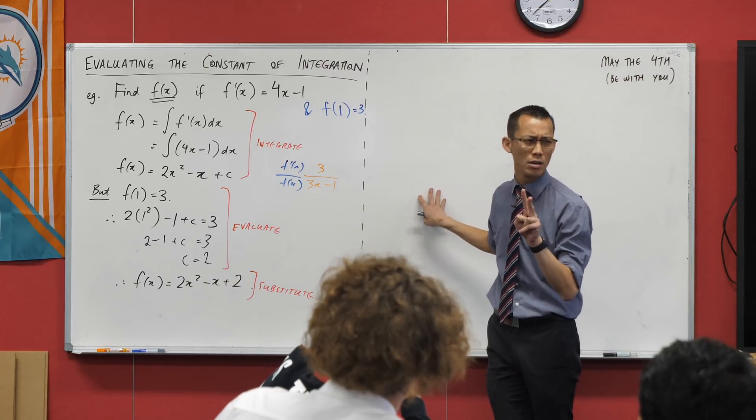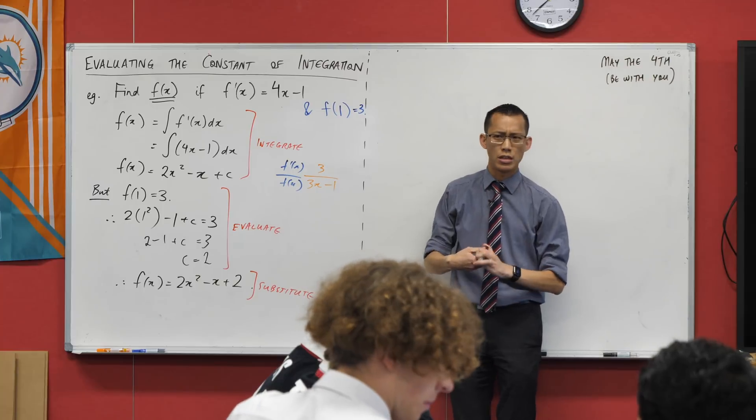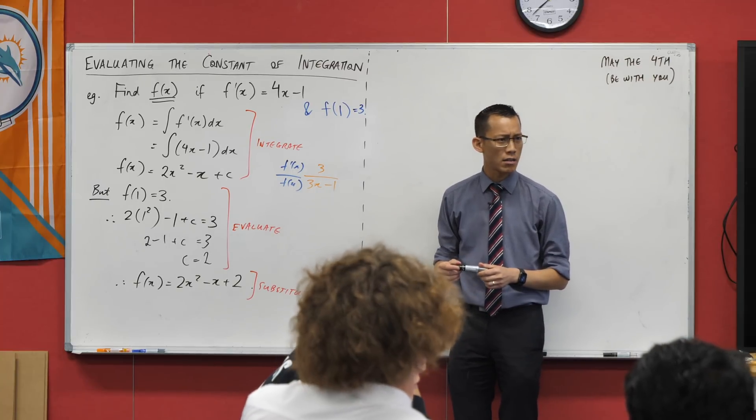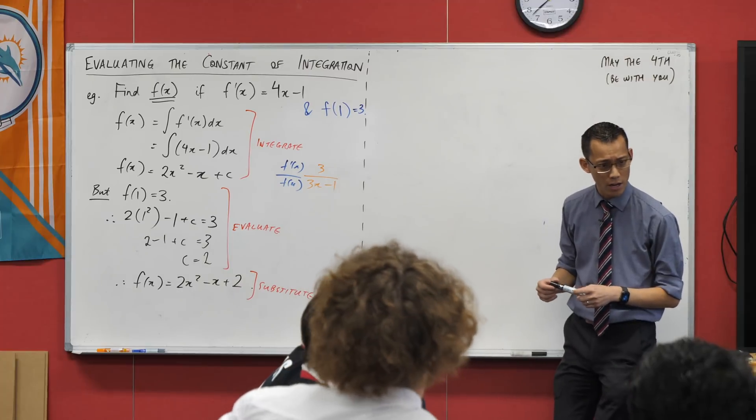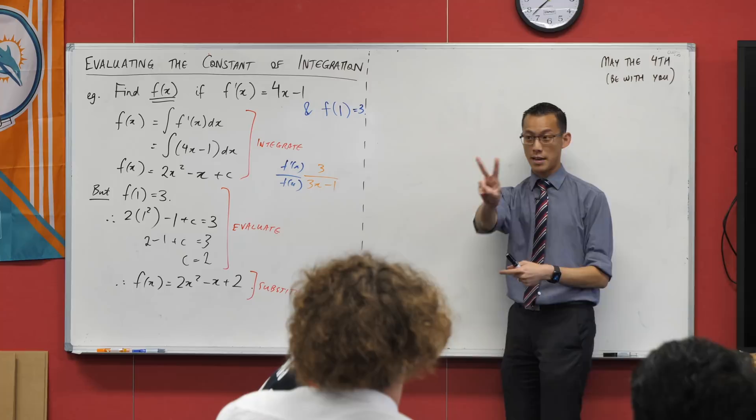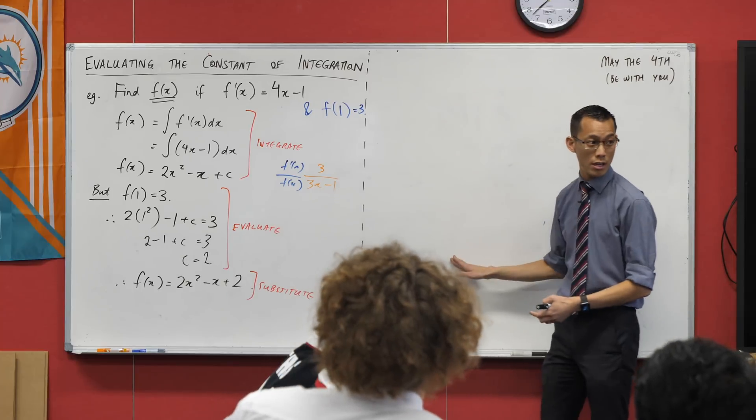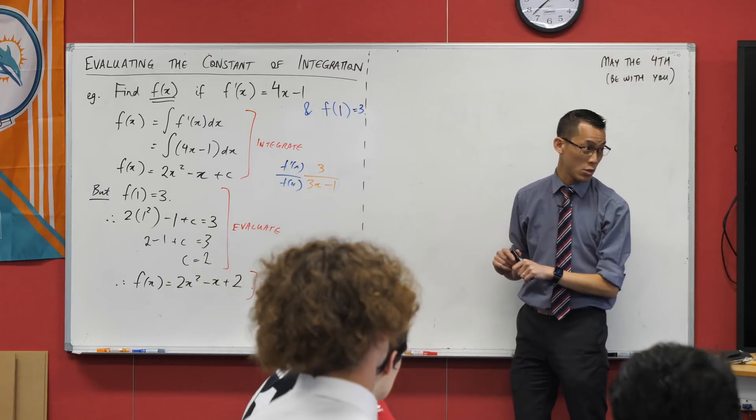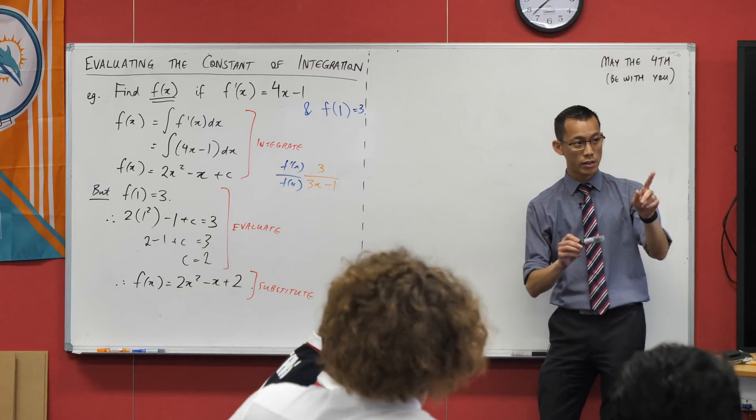And number two, it actually relates back to—can you guys remind me, just because I haven't taught you all year—how much stats have you done? You've got a fair bit of stats, right? Have you done continuous random variables yet? You've done discrete. Okay, so what that means is my second reason is what I'm about to show you here will anticipate something that you're going to do when you do continuous random variables.